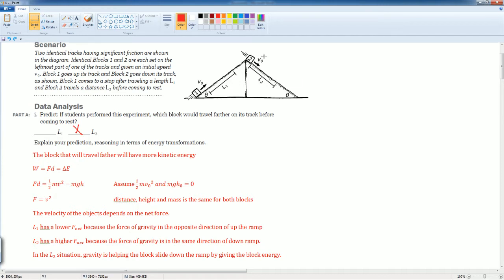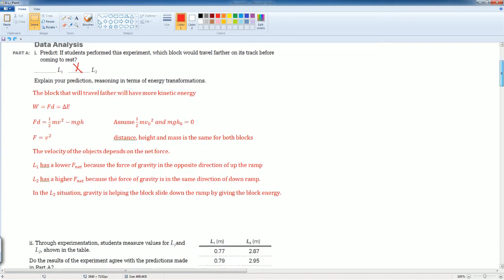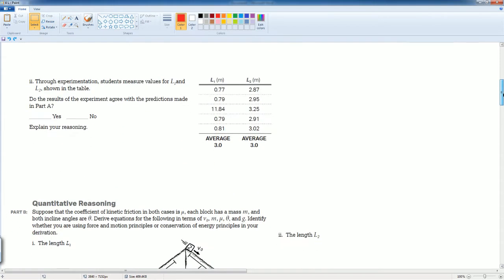In the L2 situation, gravity is actually helping the block slide down the ramp by giving the block energy. As a result, L2 will go further down because it has more energy being put into the block from gravity assisting it.